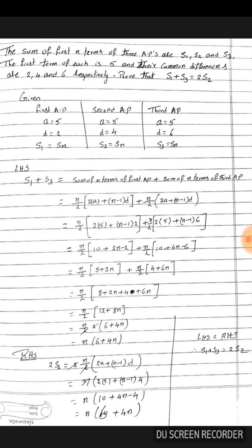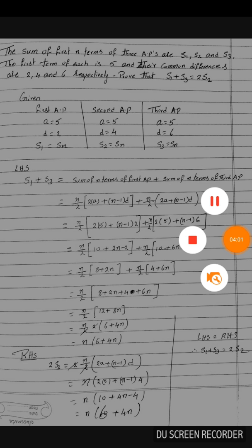Therefore LHS is equal to RHS. Therefore, s1 plus s3 is equal to 2s2. I hope you understood this answer. Thank you.